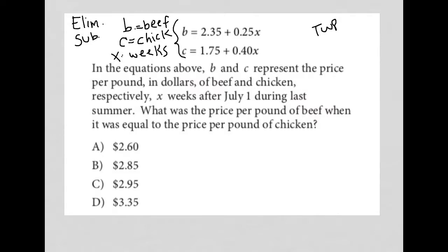What was the price per pound of beef when it was equal to the price per pound of chicken? So we're told that these two equations, b and c, represent the price per pound for beef and for chicken respectively. If we're asked when they were equal, then I should set them equal to each other and solve for x, because that will tell me how many weeks after July 1st they were equal, which will then help me find the price.